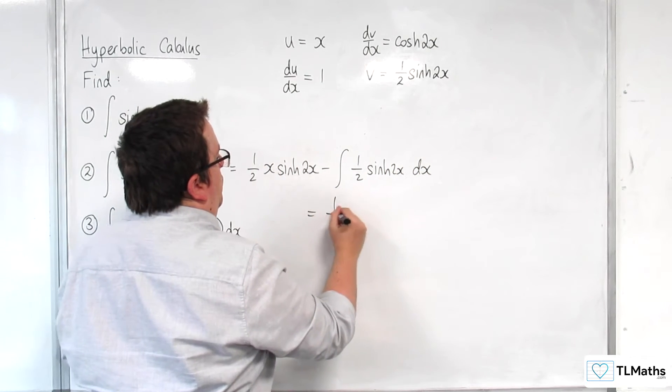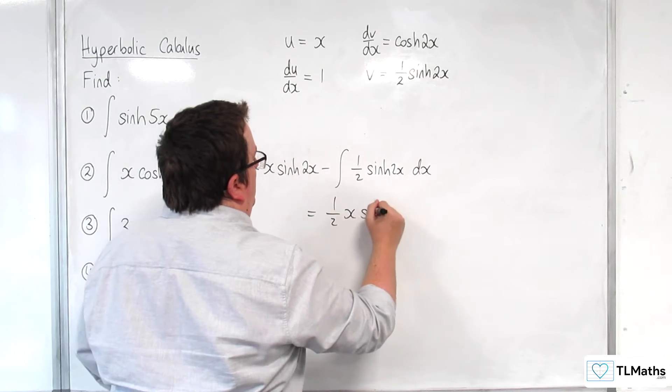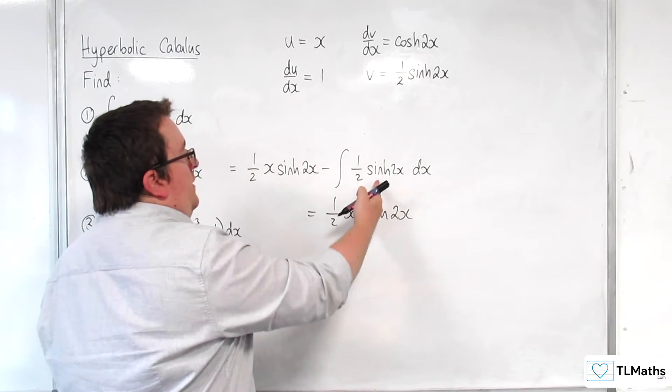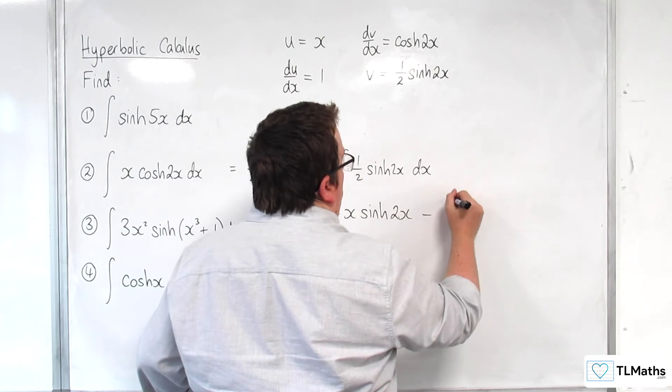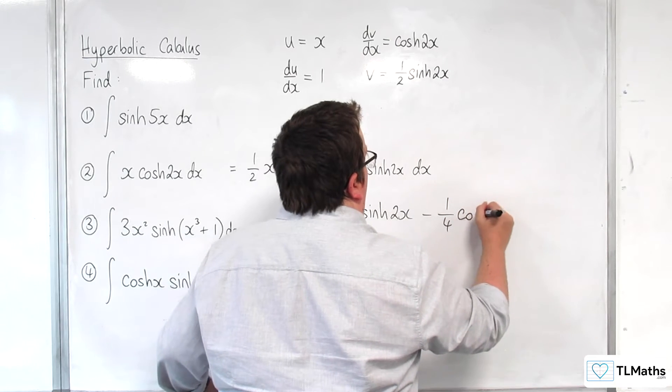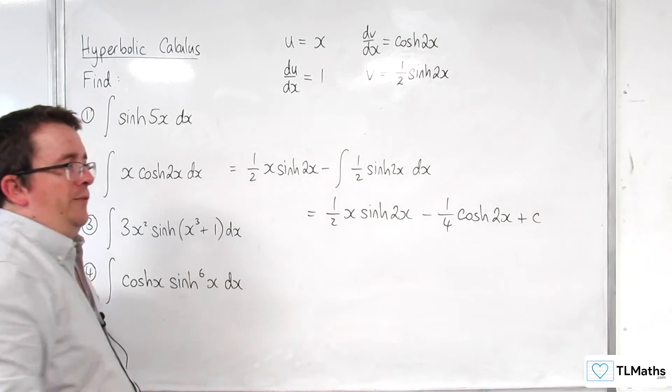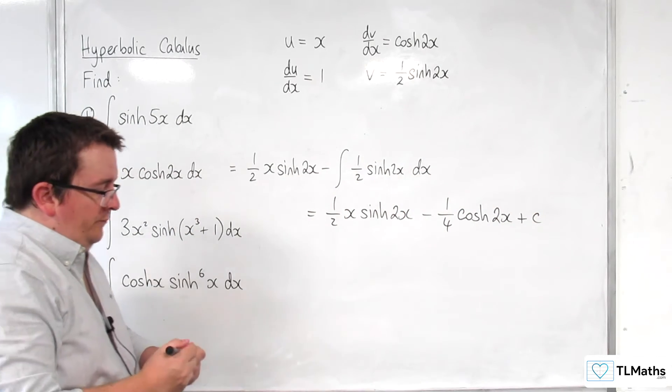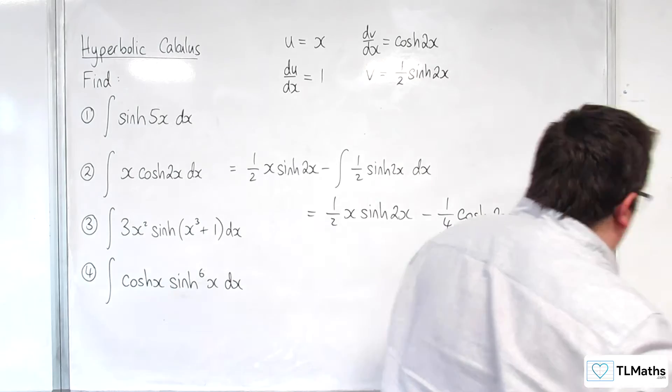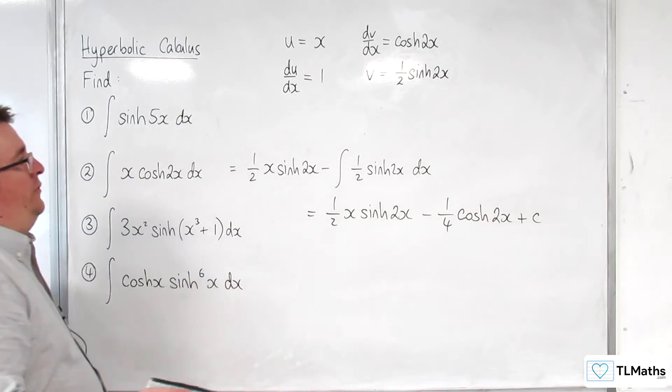And so we'll have one-half x sinh 2x. And this is going to integrate to, take away, one-quarter cosh 2x. And we've got our plus c constant of integration on the end. So that is number 2.